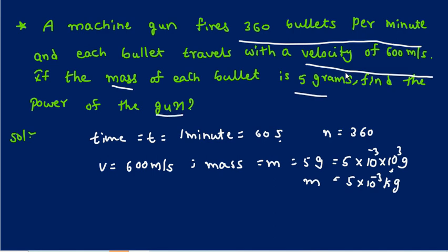Find the power of the gun. Power of the gun means p equals - actually, the formula for power is power equals work done per unit time.